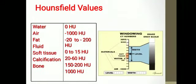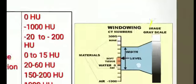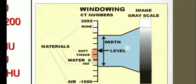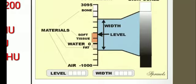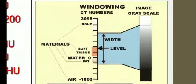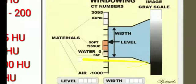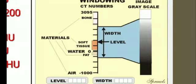Coming to the Hounsfield units, the basic values are as follows: Water has a Hounsfield unit of 0. Air is minus 1000. Fat is minus 20 to minus 200. Fluid is 0 to 15. Soft tissue is 20 to 60 Hounsfield units. Calcification is 150 to 200 Hounsfield units. And bone has plus 1000 Hounsfield units. The grayscale image is represented from more dark at the bottom to less dark at the top. You have the window width and window level — certain tissues will have certain appearances on CT. We have to select the window width and window level while viewing a CT image so that these structures can be delineated more crisply.